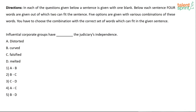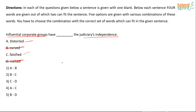Next question: 'Influential corporate groups have dashed the judiciary's independence.' The groups have made an impact - 'distorted' and 'falsified' both mean to misrepresent or deform. 'Curved' and 'melted' are not appropriate comparisons for institutional impact. Both 'distorted' and 'falsified' are correct since they mean to misrepresent. The right answer is option four - A and C.